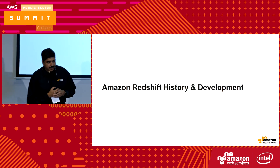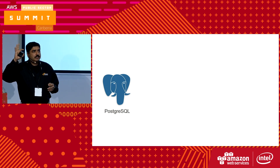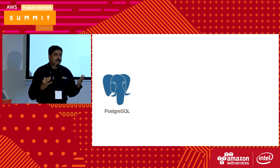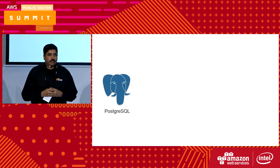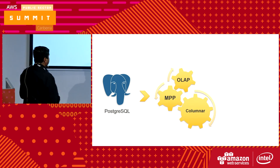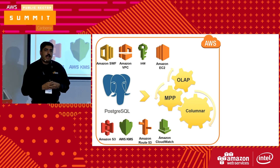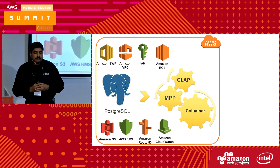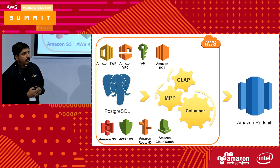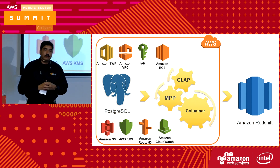History and development. What we did is we took a very familiar database, PostgreSQL, and packaged that with overlap, MPP, and columnar, added all the dependent AWS services to it — like KMS, VPCs, Route53 — and gave you a package of Redshift. So Amazon Redshift is a collection of all these services for you.